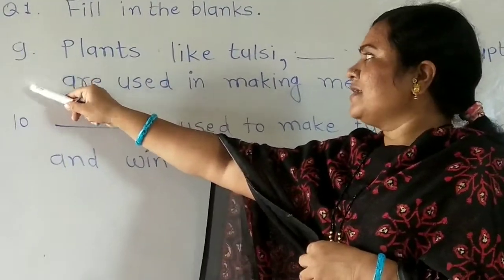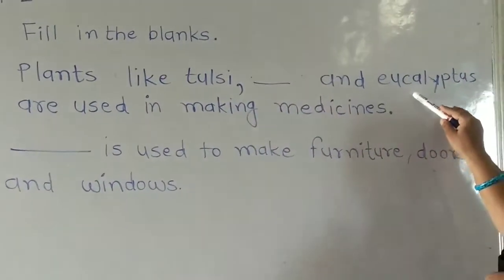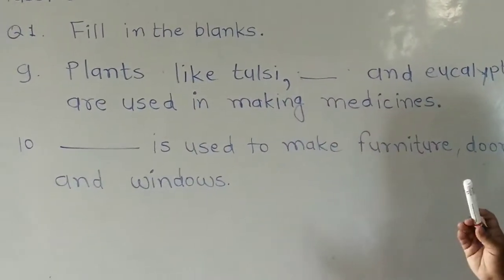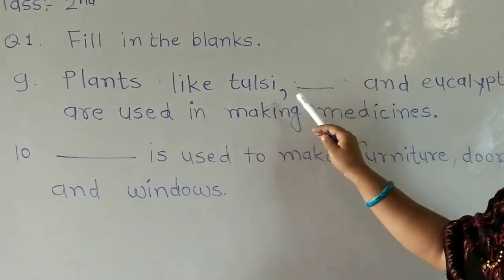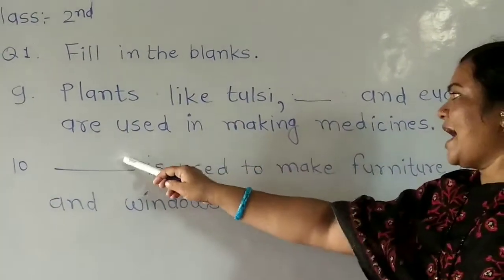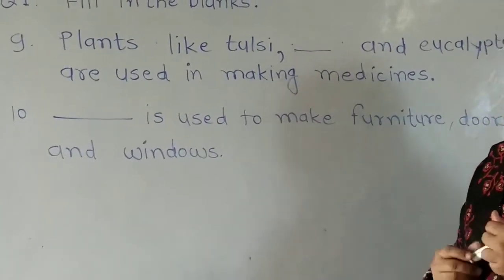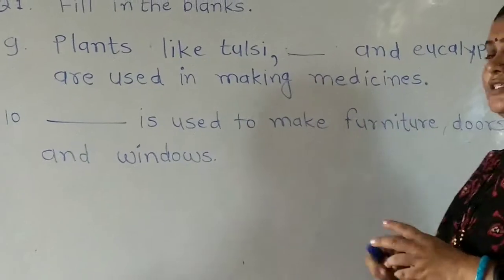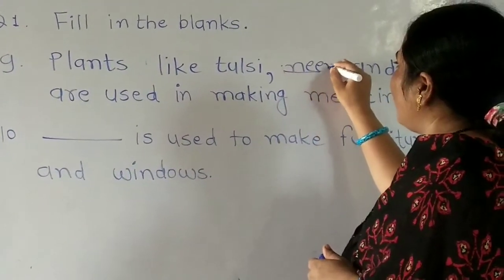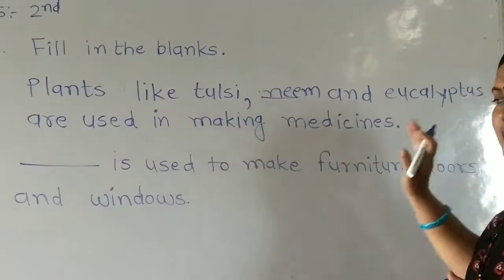Number 9: Plants like tulsi, dash dash, and eucalyptus are used in making medicines. The answer is neem. Tulsi, neem, and eucalyptus are plants used to make medicines.